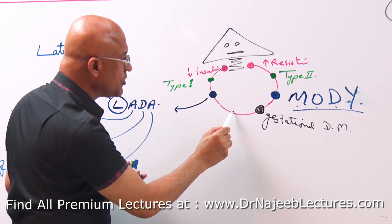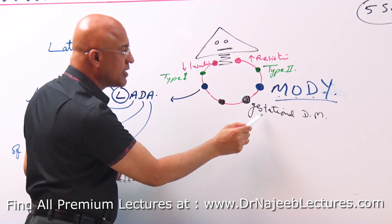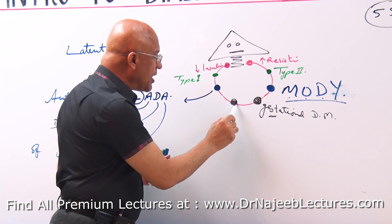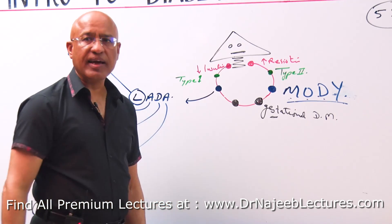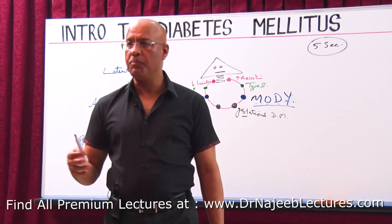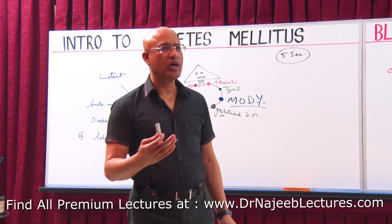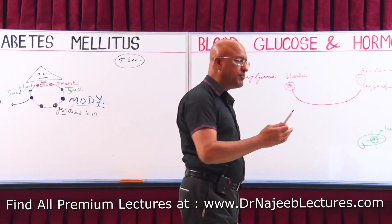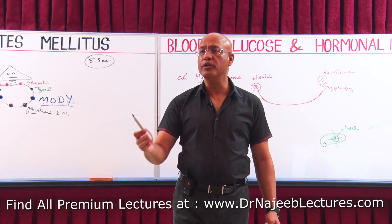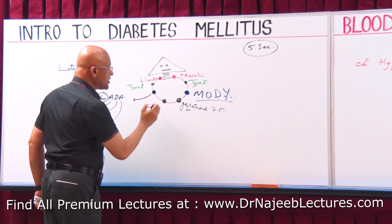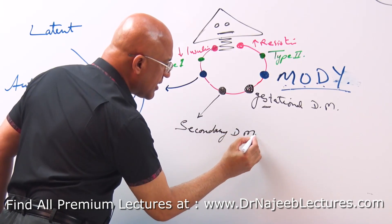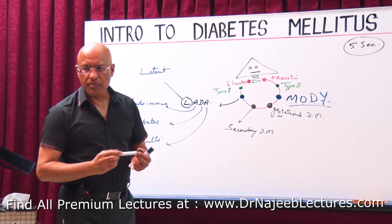Gestational diabetes is limited to females. There is also another type of diabetes which may be secondary to certain situations — for example, if someone takes a drug chronically that produces hyperglycemia, they will have chronic hyperglycemia, and we call this drug-induced diabetes mellitus — a type of secondary diabetes mellitus.